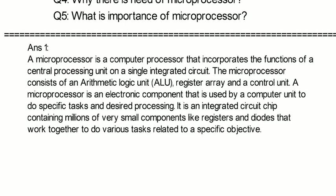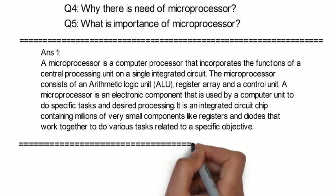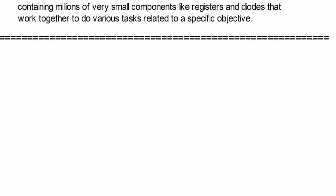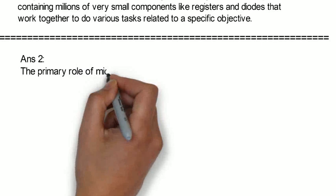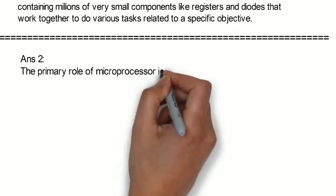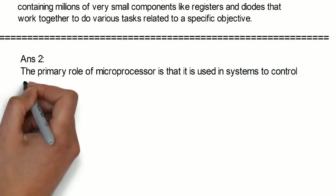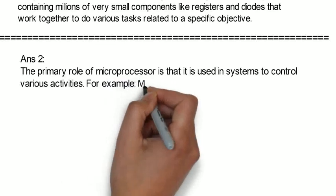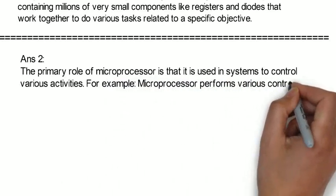Now we will study second question. What are its roles? The primary role of microprocessor is that it is used in systems to control various activities. For example, microprocessor performs various controlling actions as in the case of data communication,